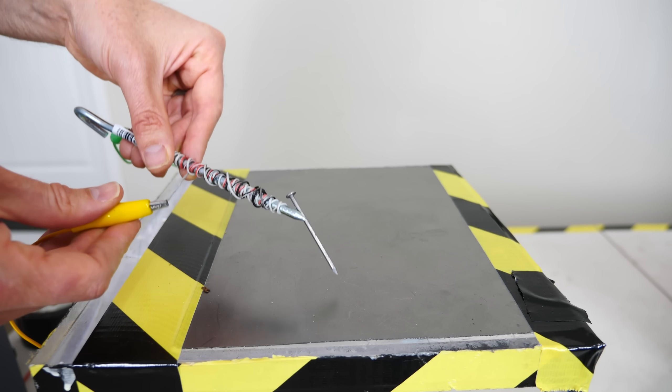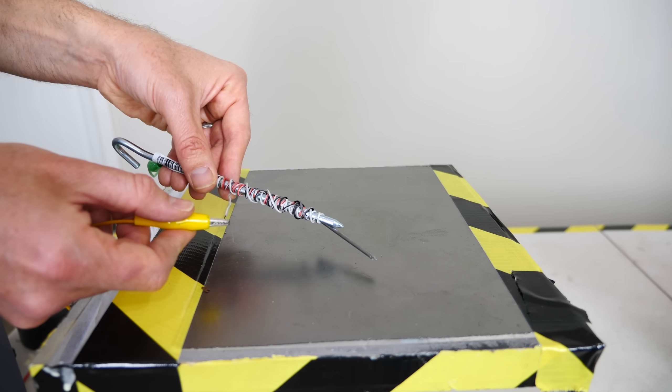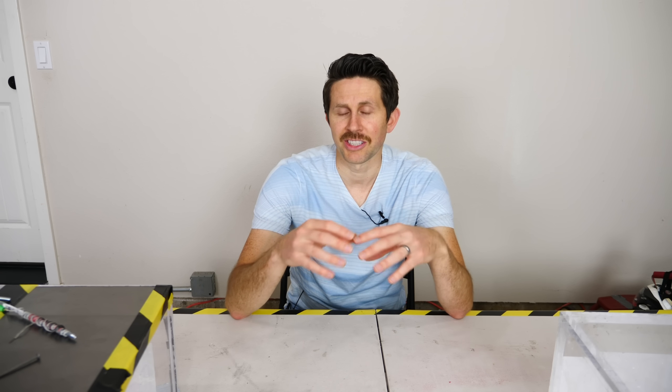So we've shown that if you have moving electrons or a changing electric field, you can create a magnetic field. And what's interesting is the reverse of that is also true. If you have a changing magnetic field, you can create an electric field or an electric potential.